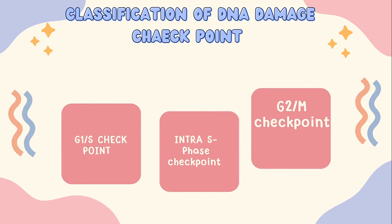The first is the G1/S Checkpoint. Here, the cell which is in G1 phase and is trying to enter S phase encounters this checkpoint. The parental DNA needs to be checked so that it doesn't have any damage before it is allowed to enter into S phase.